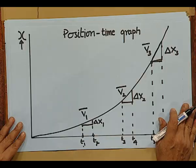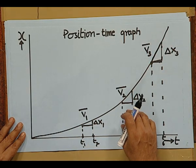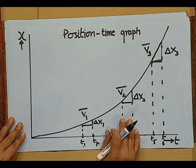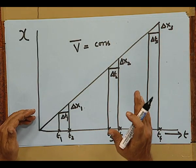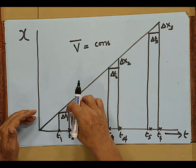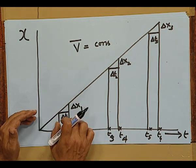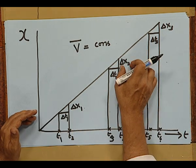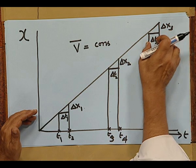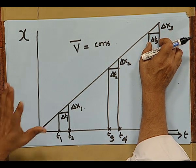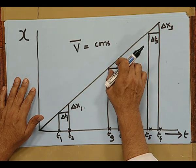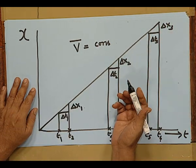Unlike the earlier curve, where the position-time graph had different slopes at different timings — meaning the slopes increase, so velocity goes on increasing — in the linear position versus time graph, the delta x by delta T ratios are all the same. The slopes are the same: height-to-base ratio is constant, and this is a straight line. What it means is the velocity does remain constant.